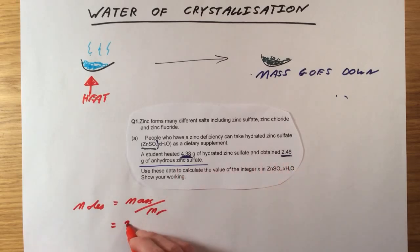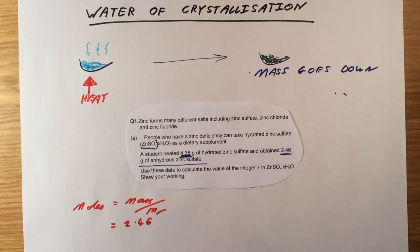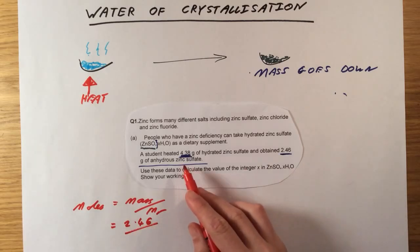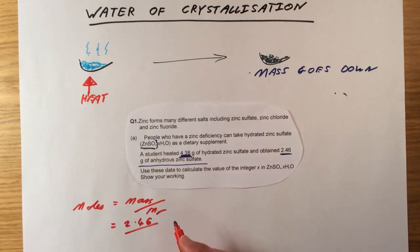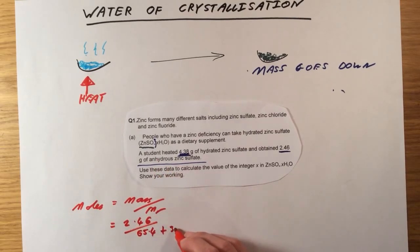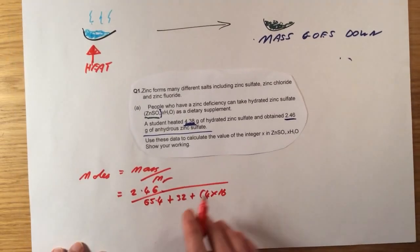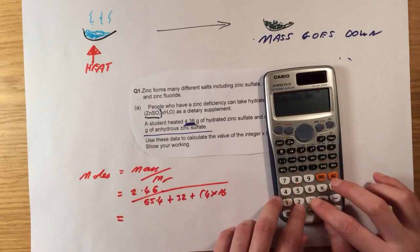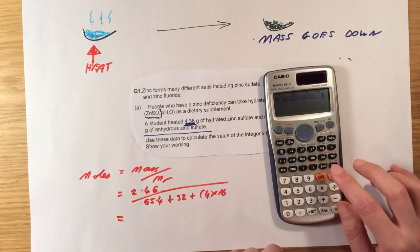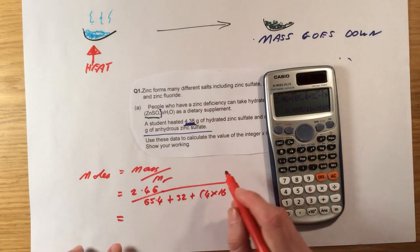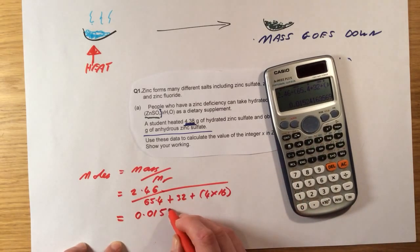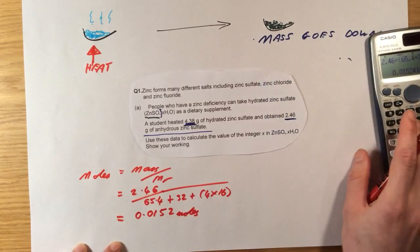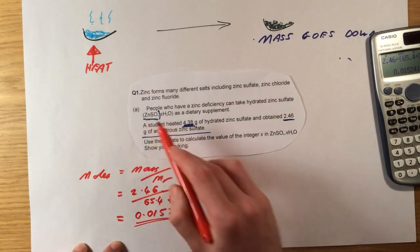The mass of anhydrous zinc sulfate is 2.46 grams. The MR of zinc sulfate we can calculate using a periodic table. So doing ZnSO4, zinc has a mass of 65.4. We've got 1 sulfur which has atomic mass of 32, and we've got 4 oxygens, 4 times 16. So if I work this out...